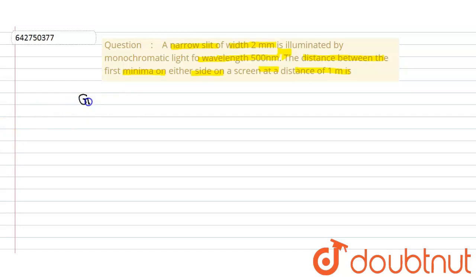So first of all we write the given quantities. What is the given quantities? The small a, that is a narrow slit having 2 millimeter, so we can write 2 multiply by 10 to the power minus 3 meter.